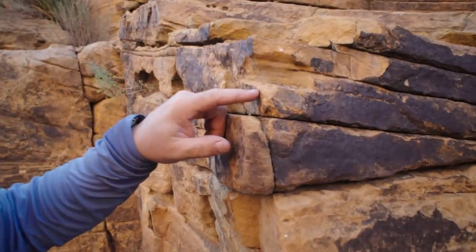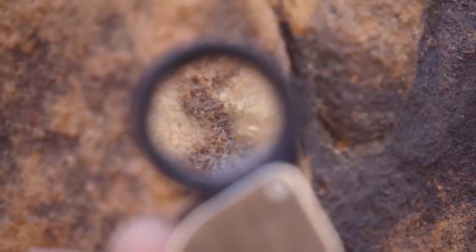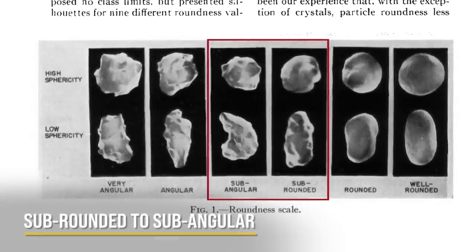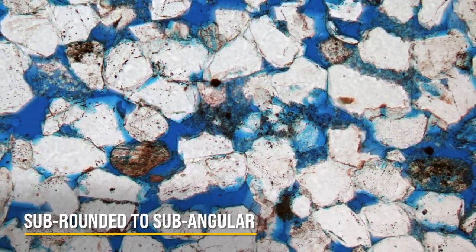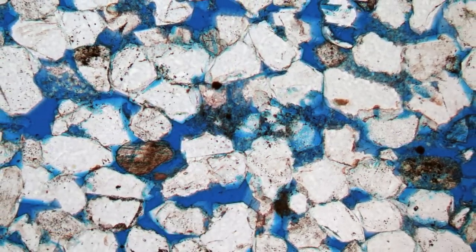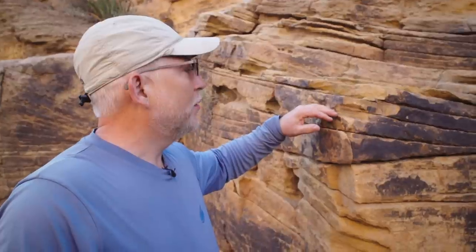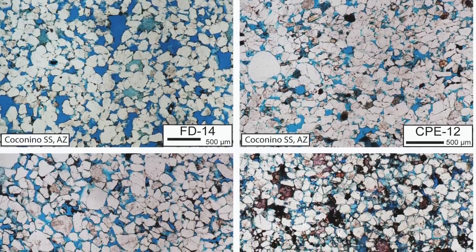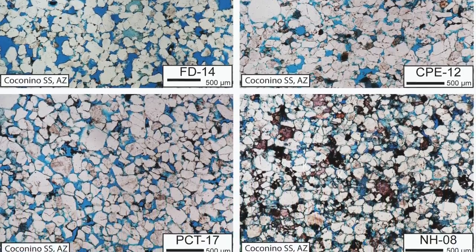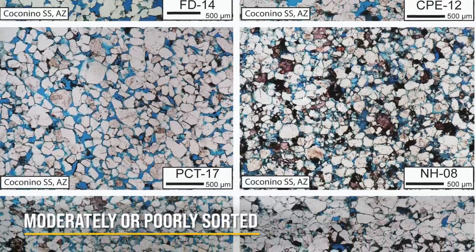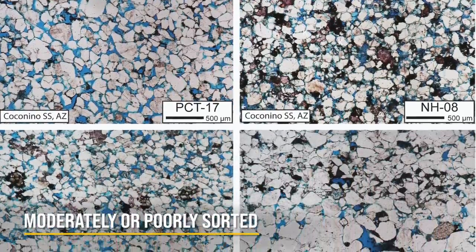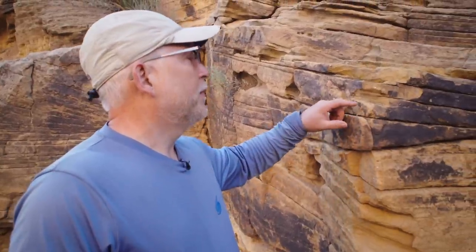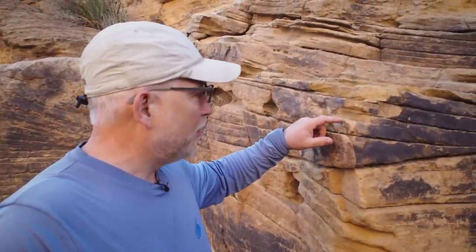When we cut thin sections and looked at this rock under the microscope, we found that these are not well-rounded sand grains — they are sub-rounded to sub-angular, which is probably not something we would expect in a desert setting. We also did measurements on grain size and found it is not all consistent in size; this sand is maybe moderately sorted at best, and in some places I've seen it poorly sorted. Again, those are things inconsistent with the desert model.